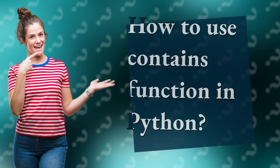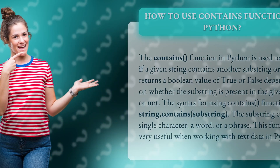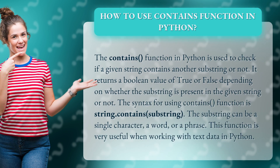How to use the contains function in Python. The contains function in Python is used to check if a given string contains another substring or not. It returns a boolean value of true or false depending on whether the substring is present in the given string or not.